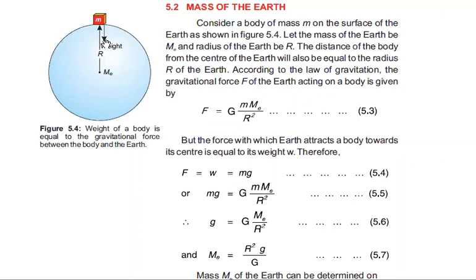The weight acts vertically downward towards the Earth. Now, the force of gravitation will be F equals G m Me over r².